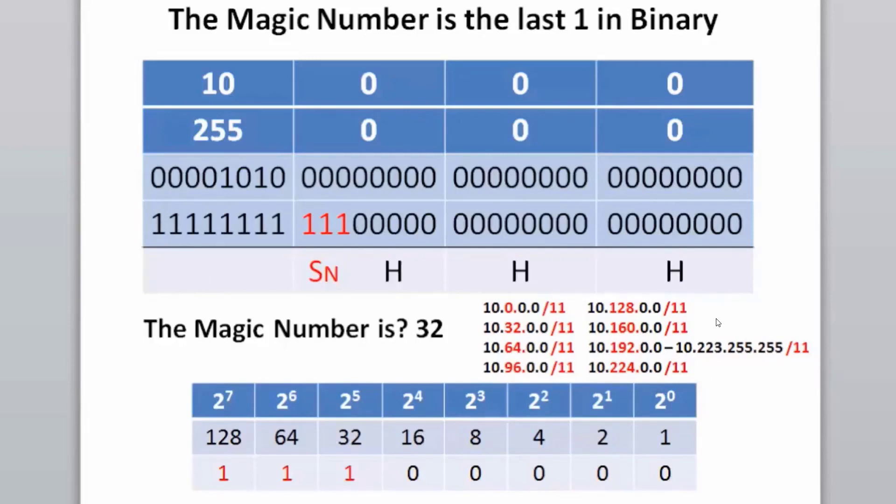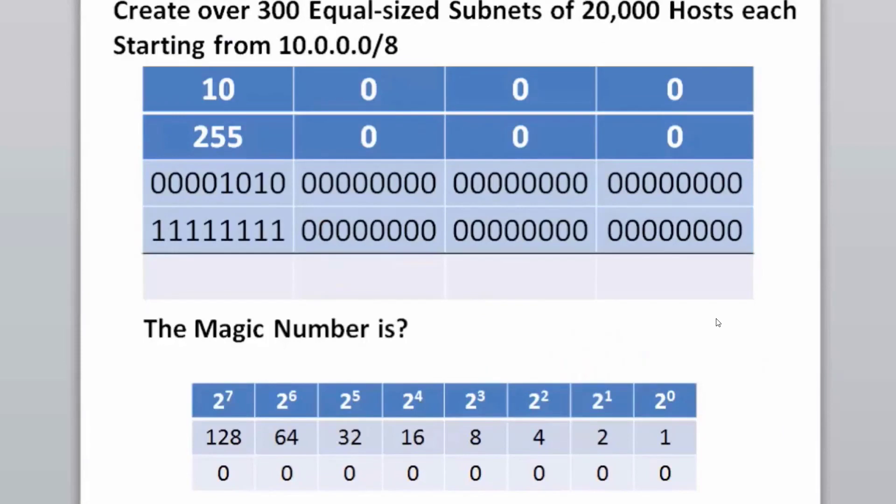What about a more difficult scenario? In this scenario, we need to create over 300 equal size subnets of 20,000 hosts each, starting from the 10.0.0.0 slash 8 network. So we need to create a lot more subnets and we need a lot of hosts. Looking at this situation, we know that we're going to need to borrow bits from the host portion of our subnet mask. The question is, how many bits will we borrow?